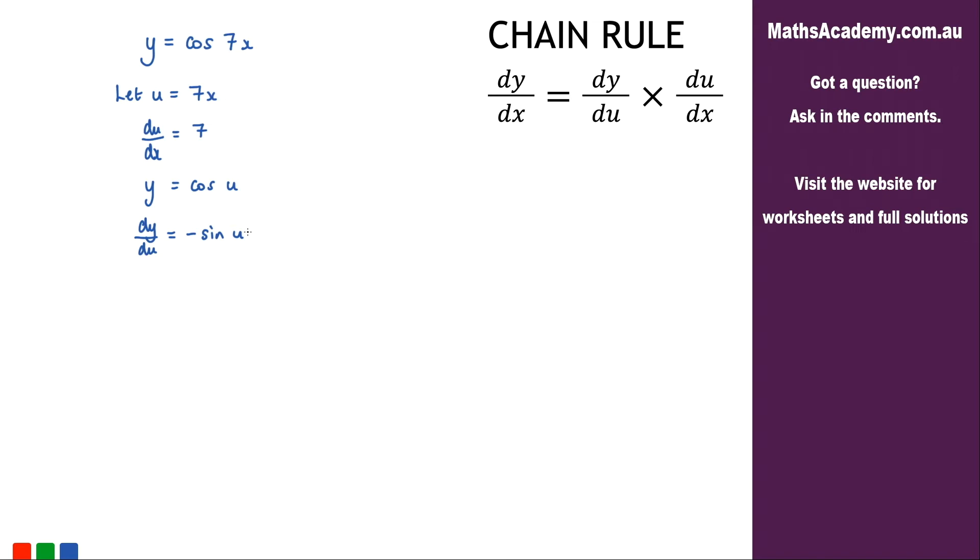Now that we've got all these we can apply the chain rule. So dy by dx is equal to dy by du multiplied by du by dx.